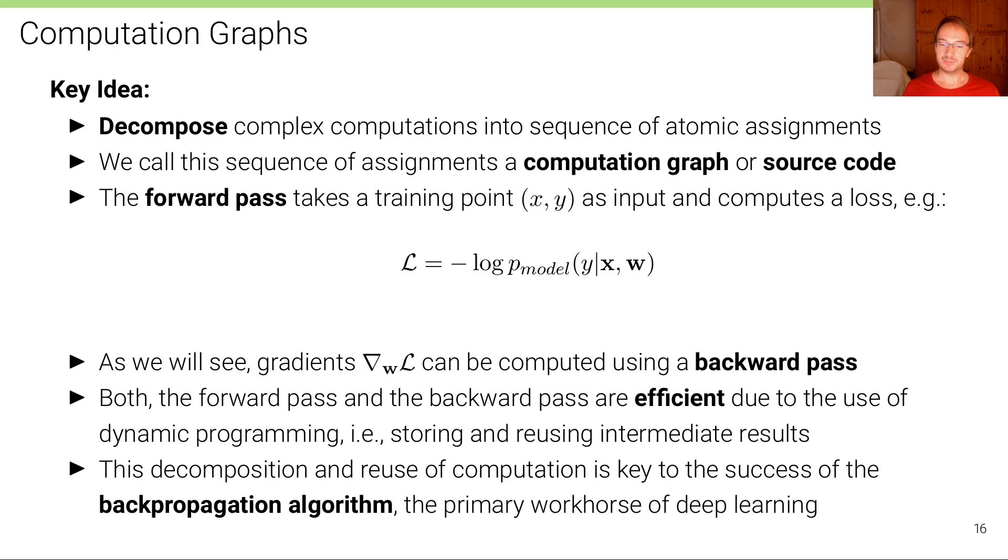This decomposition and reuse of computation is really key to the success of this backpropagation algorithm. Without this, it wouldn't be possible to apply this algorithm to the size of models that we apply it to. It would be unthinkable to optimize deep networks with millions or billions of parameters without this decomposition and reuse of computation. That's why the backpropagation algorithm, which adjusts these millions and billions of parameters in our deep models, is still the primary workhorse for deep learning today.